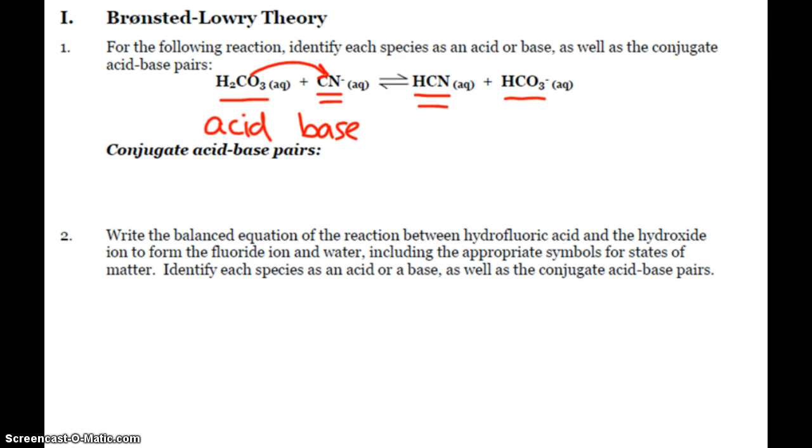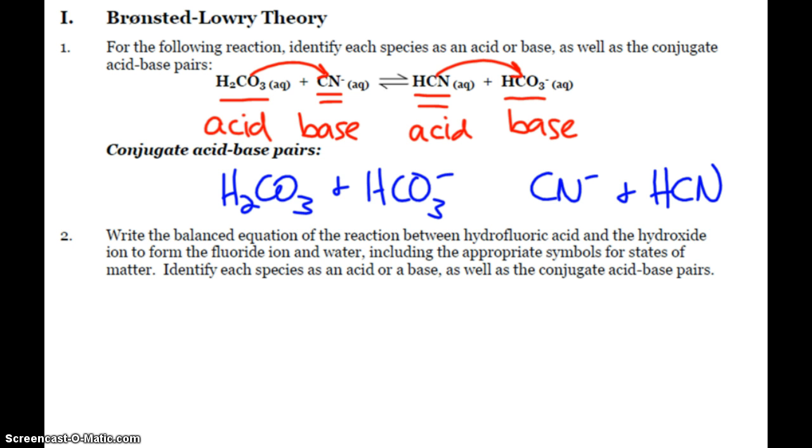So that is the base. On the flip side, to go back, I have my HCN giving the hydrogen back, so to speak. There's my acid. There's my base. And then, the conjugate acid-base pairs, they have to be on opposite sides of the equilibrium, and they differ by a proton. So my H2CO3 and my HCO3 negative is one pair, as is my CN minus cyanide and my hydrogen cyanide. So those are my acid-base pairs for that reaction.